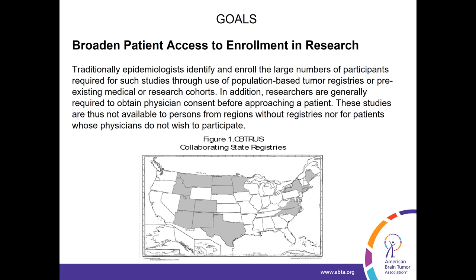This is some data from the Central Brain Tumor Registry of the United States, a population-based registry that gathers data on brain and spinal cord tumors. To give you some feel for the numbers, we think about 3,000 individuals within the United States are diagnosed with low-grade glioma every year. The average age is about 41 years, and there are slightly higher rates reported for males versus females and whites versus non-whites.